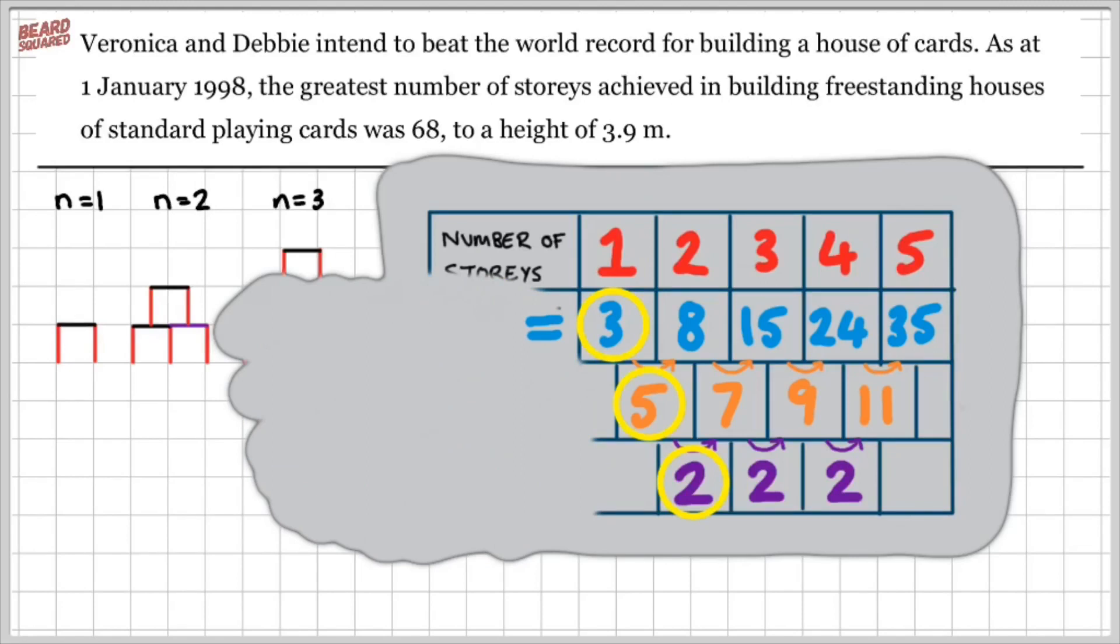Now I'm going to equal each one of these terms to a specific expression. The first one is A plus B plus C. The second one is 3A plus B. And the third one is going to be 2A. These you're going to use by default. You're always going to use this when trying to solve a quadratic sequence.